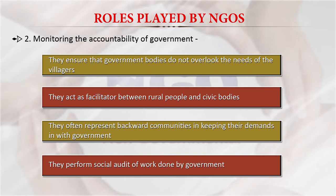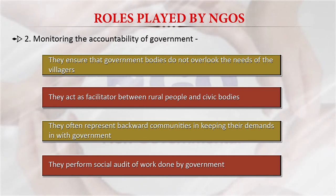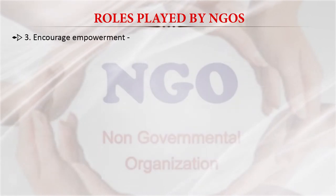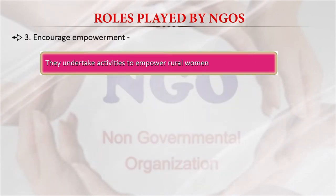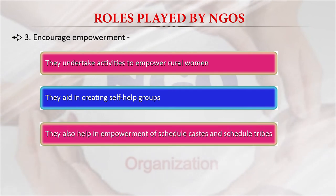NGOs perform social audits of work done by the government and post findings on social media to start movements. Cases like the Right to Education Act and the Rights of Persons with Disabilities Act started with movements initiated by NGOs, after which the government formulated these policies. NGOs also encourage empowerment by taking activities to empower rural women, aiding in creating self-help groups, and helping in empowerment of Scheduled Castes, Scheduled Tribes, and the rural poor.